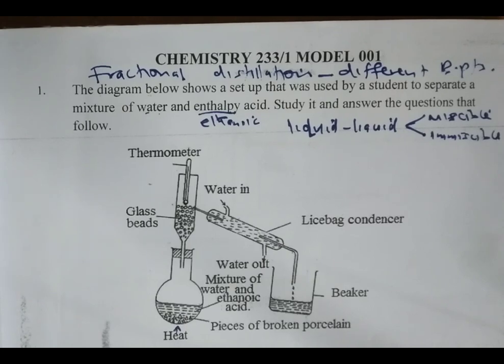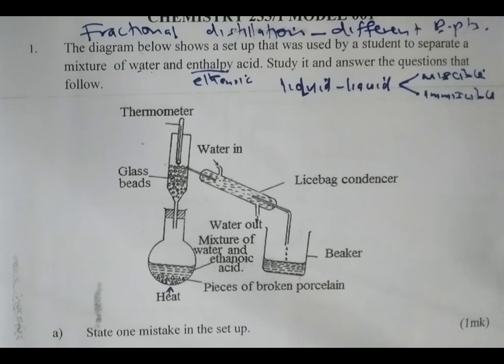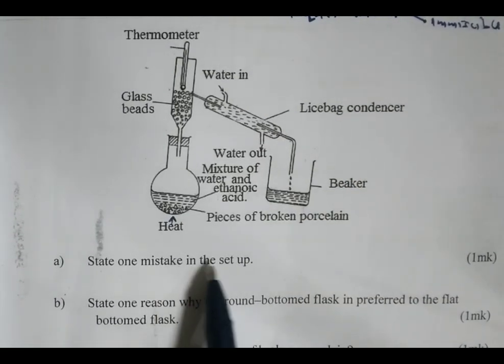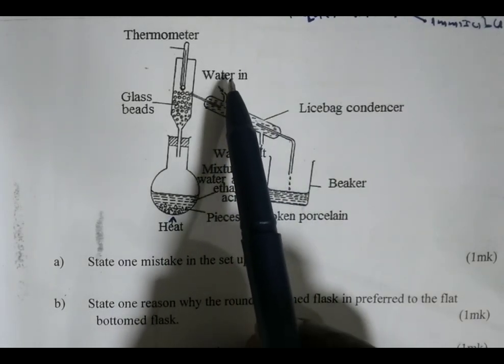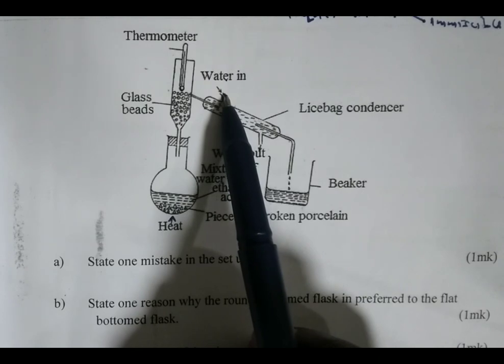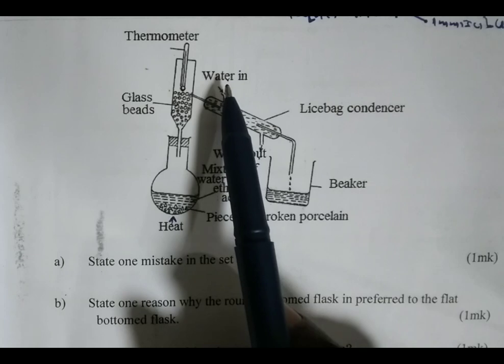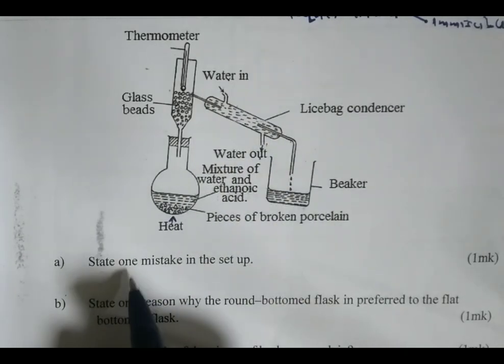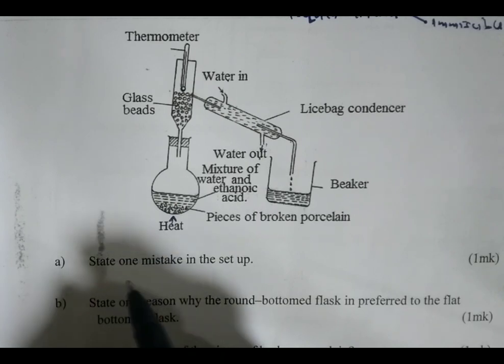Let us go through the questions given. The first question: state one mistake in the setup. If you look at our setup, water in should be water out and water out should be water in. It means the water inlet and water outlet have been interchanged. So that is one of the mistakes that has been committed in this particular setup.